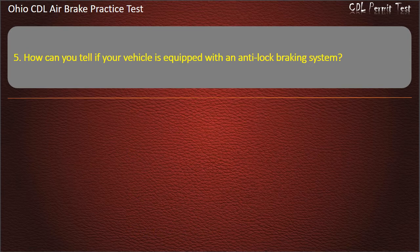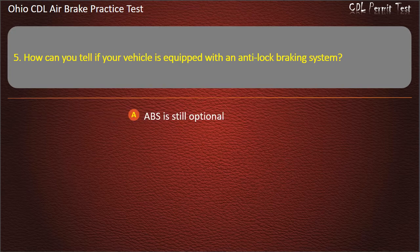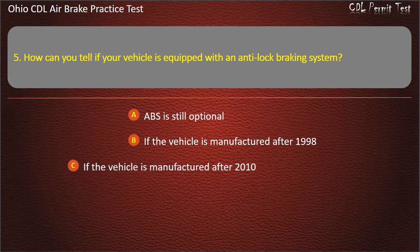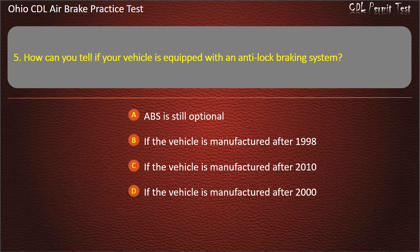Question 5: How can you tell if your vehicle is equipped with an anti-lock braking system? ABS is still optional. If the vehicle is manufactured after 1998. If the vehicle is manufactured after 2010. If the vehicle is manufactured after 2000. Answer: If the vehicle is manufactured after 1998.